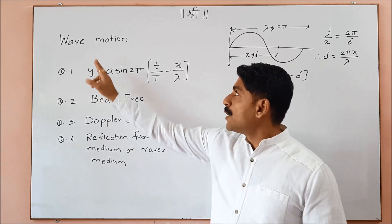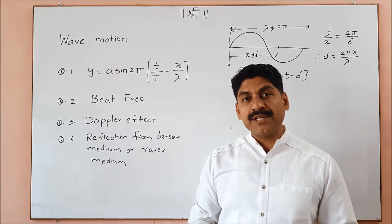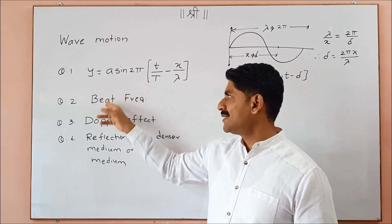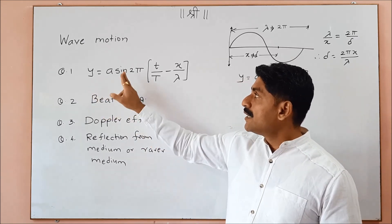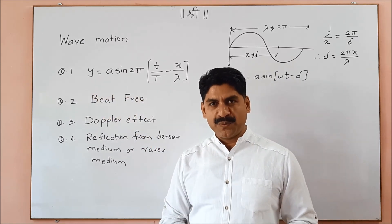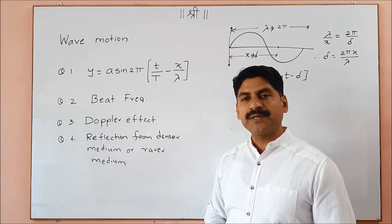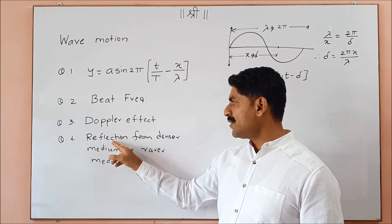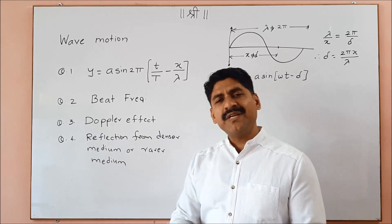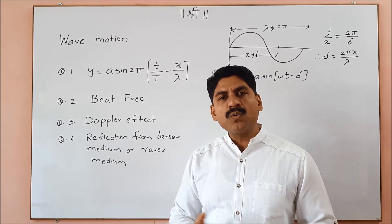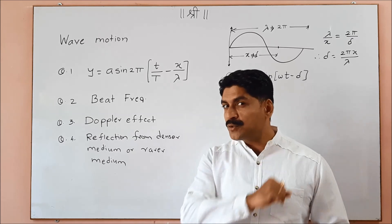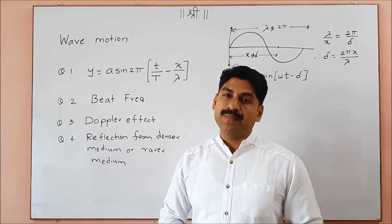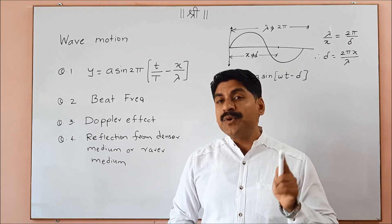Now we have the topic of wave motion. We have to ask only 3–4 questions. There are two expressions to understand: the simple harmonic progressive wave expression and the beat frequency expression. The Doppler effect and its applications — we have to know the expression. Reflection from denser and rarer medium is a question for MCQ, worth 1 mark.